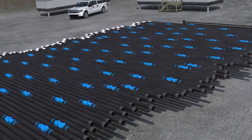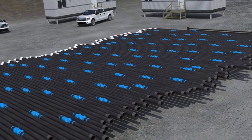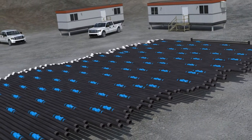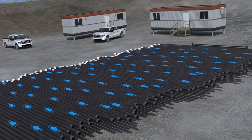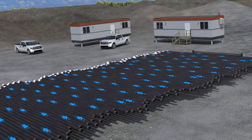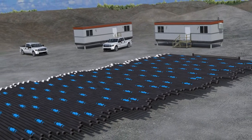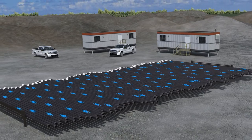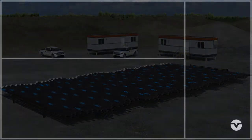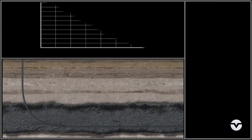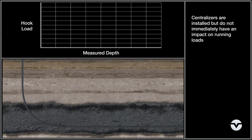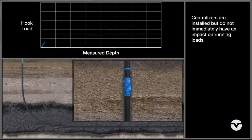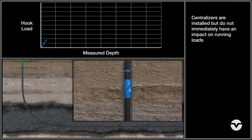Allowing operators to extend well reach and decrease time to total depth. With Volant's proprietary centralizer placement optimization program, centralizers are placed at engineered intervals to reduce the effects of drag and help mitigate buckling of the string. The second scenario shows the same extended reach well, but now showcases the capabilities of Volant's Hydroform Centralization Solutions.